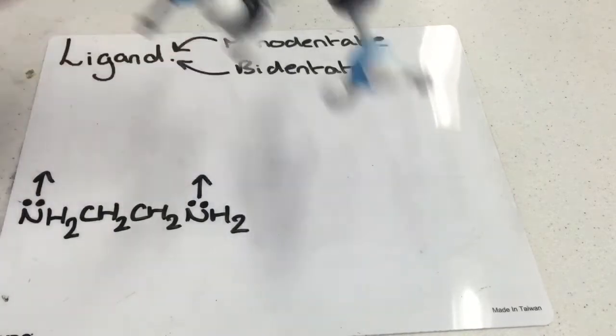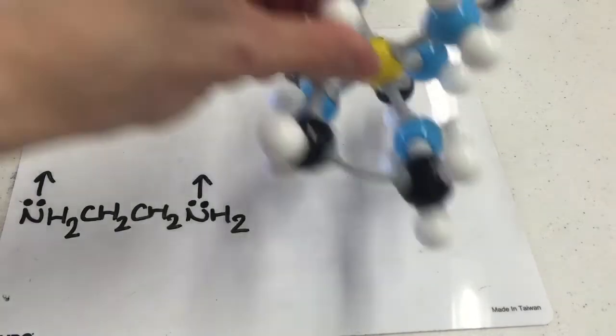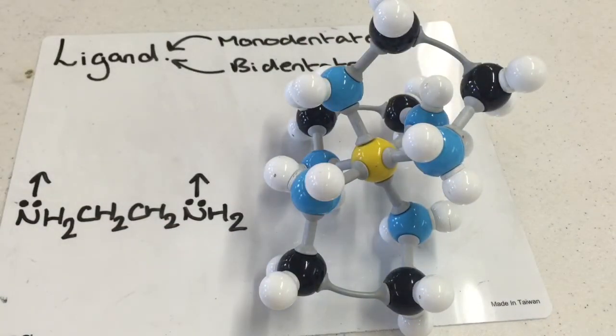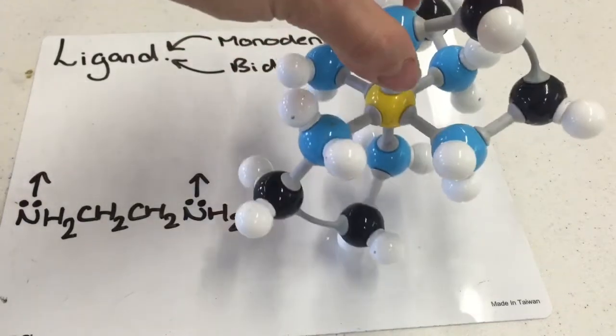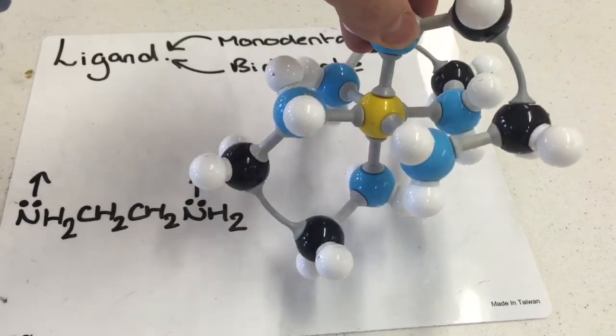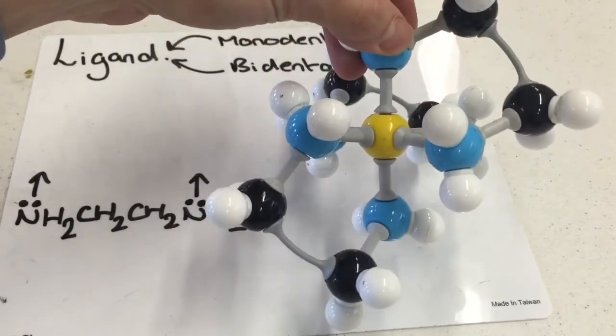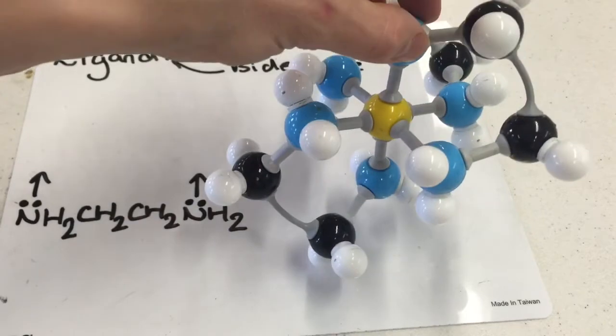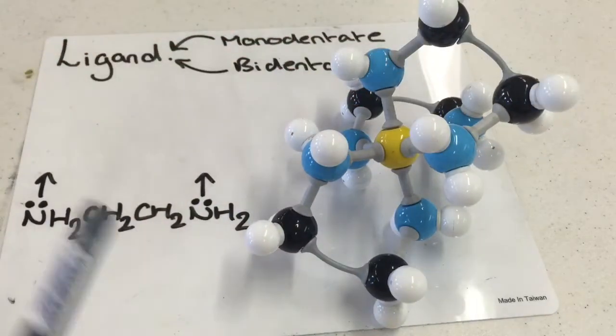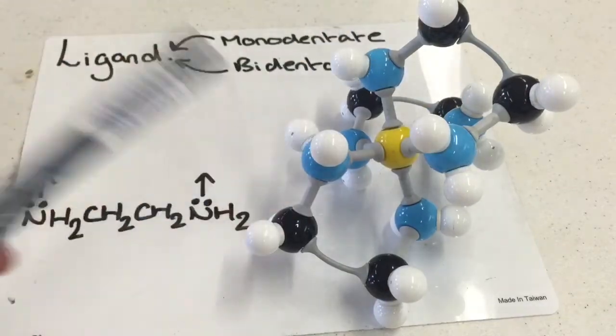And so if I cluster these around a transition metal ion, we have this rather large structure here. Now if we look at this carefully, we can see the transition metal ion in the middle is still octahedral, bond angle is 90 degrees there. And we can see that since it's octahedral, it's got six coordinate bonds from these nitrogens clustered around the structure.